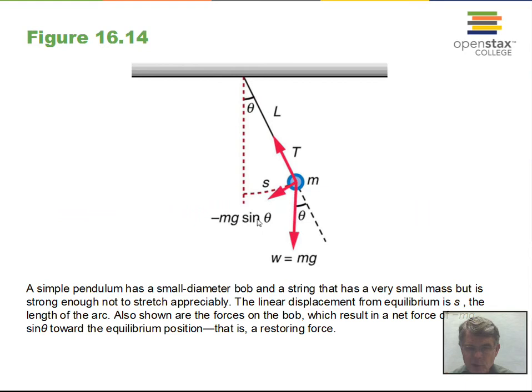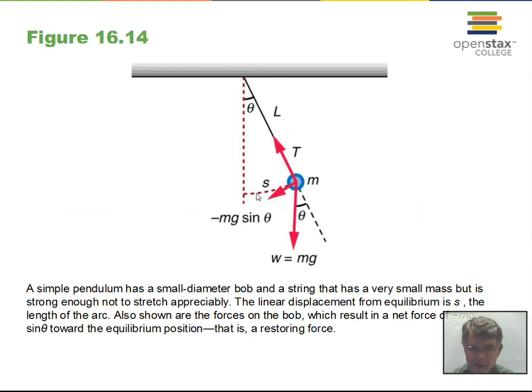However, for small angles, sinθ is approximately equal to θ. You can verify this with a calculator in radian mode: take the sine of 0.01 radians — it's very close to 0.01; take sine of 0.02 radians — it's very close to 0.02. So we nearly have a restoring force proportional to displacement, but the trig function variation keeps the relationship not quite exactly proportional.